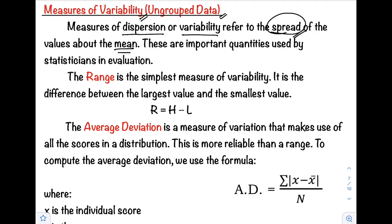These are the important quantities used by a statistician in evaluation. Number one, we have the range — the simplest measure of variability. To find the range, it is the difference between the largest value and the smallest or lowest value. In symbol, that is R equals H minus L, where H is the highest value and L is the lowest value.